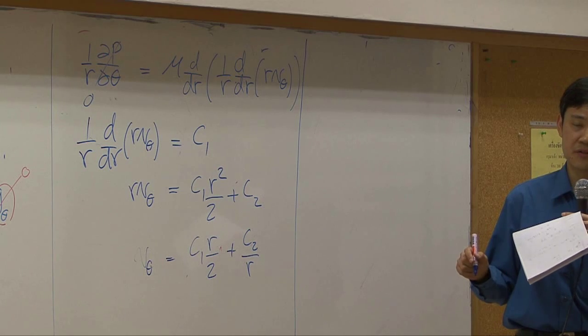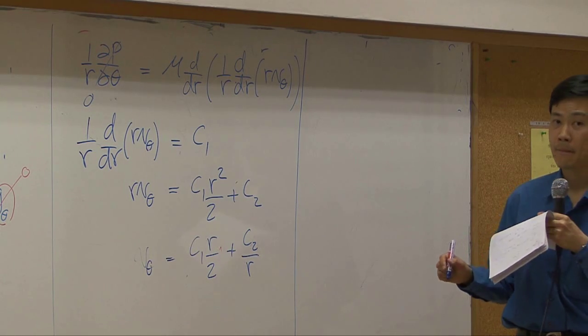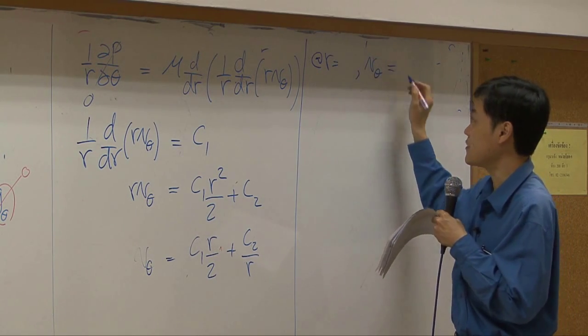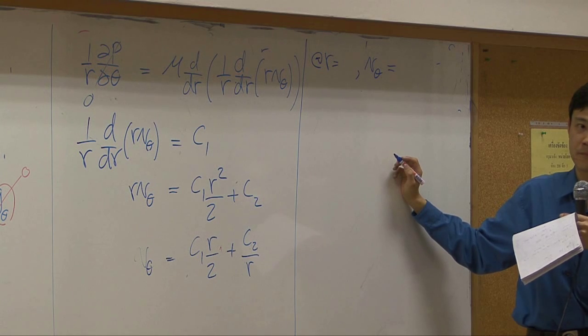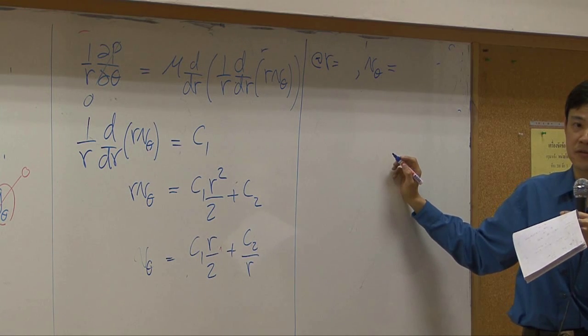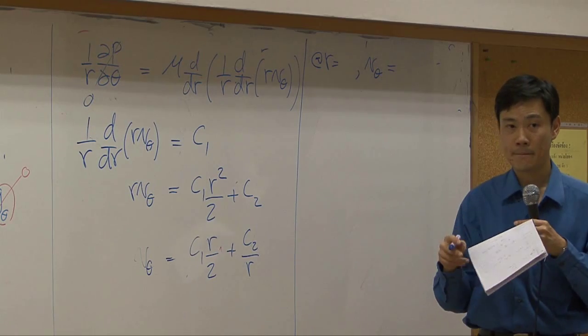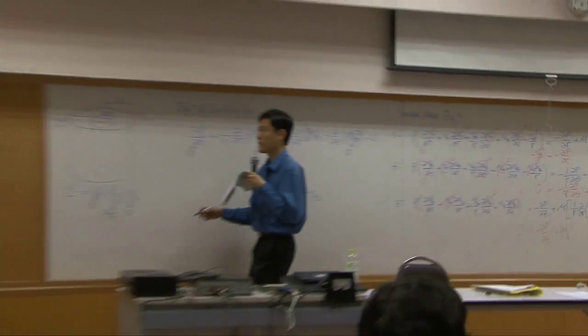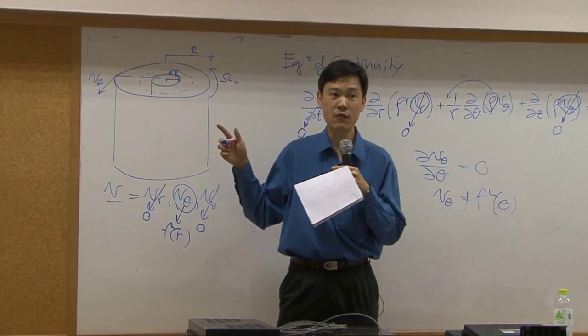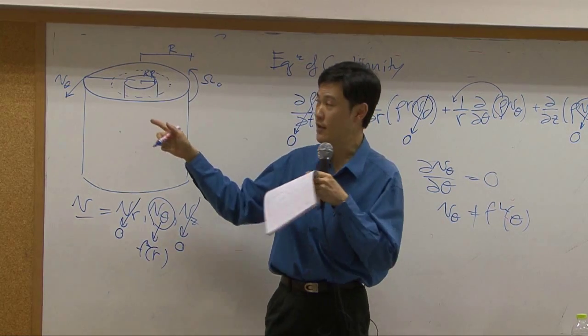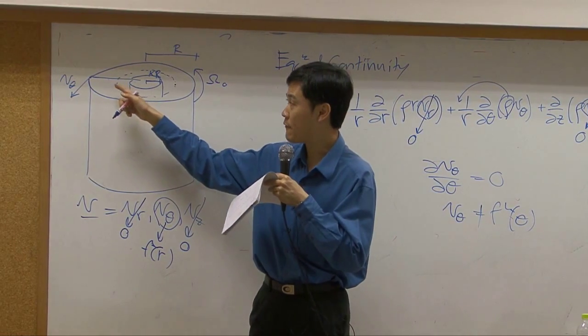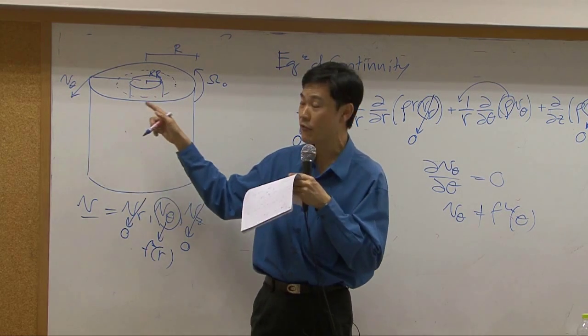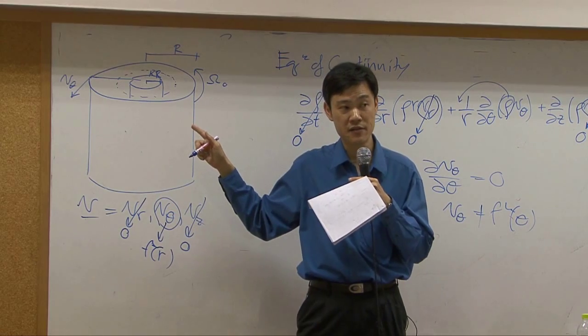What are boundary conditions? We must know at r equal to something, velocity v theta is equal to some certain number. What do we know from the picture? According to the picture here, when we look for boundary conditions, we look for interfaces between two phases. Right now we have fluid phase, solid phase, and another solid phase outside, so boundary conditions are supposed to be located at these interfaces.